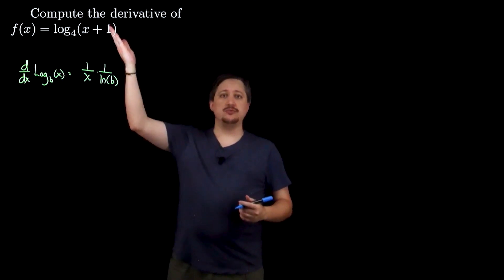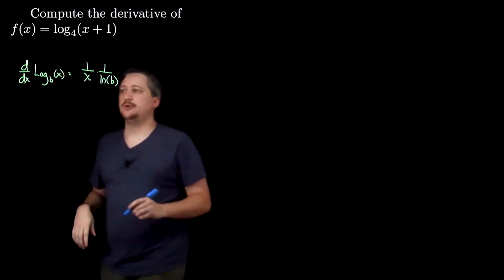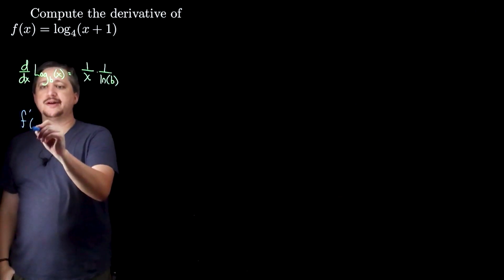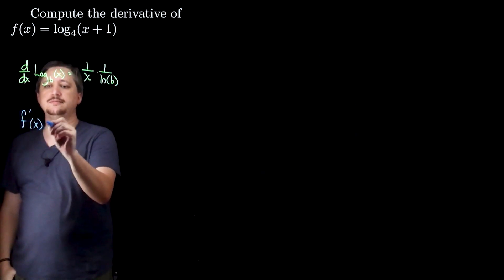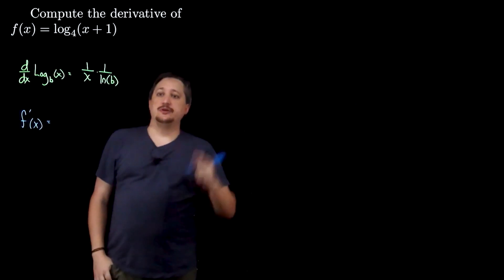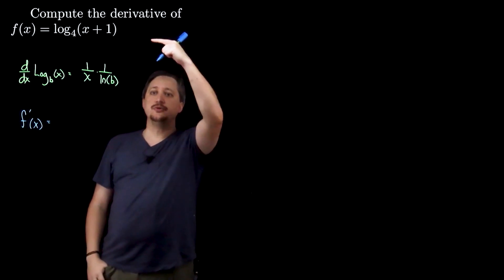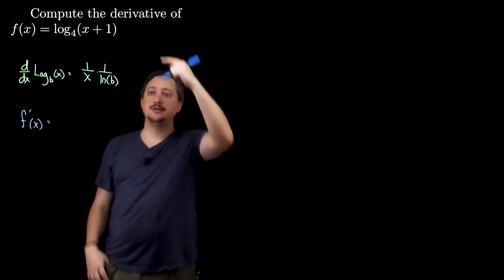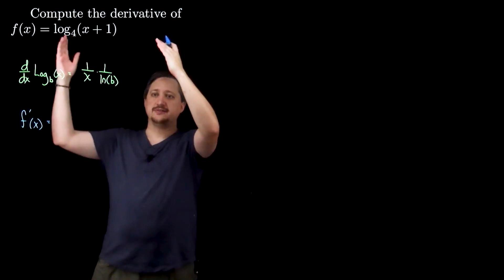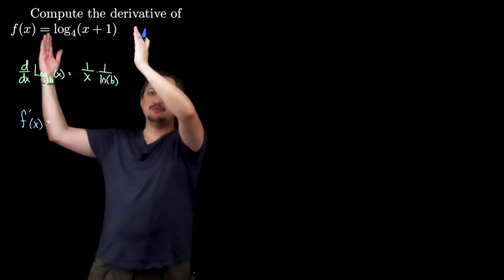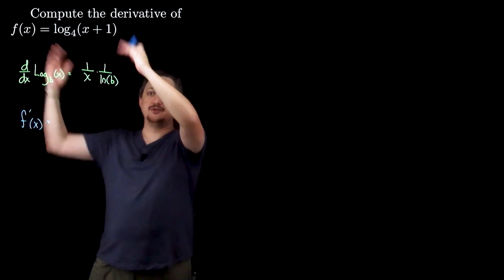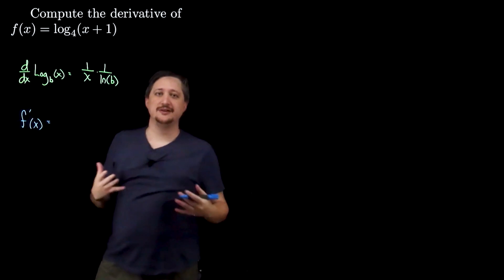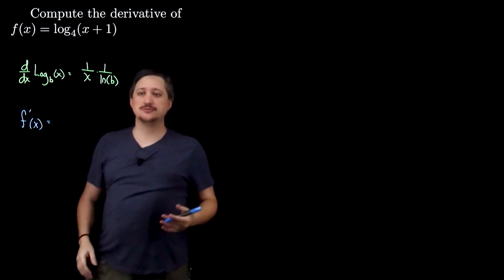With that in mind, let's go ahead and compute our log. We want f prime of x. That's just going to be the derivative of log base 4 of x plus 1. I start by looking at this as the derivative of log base 4 of some u, because that's not just x, so I'm going to need a chain rule.